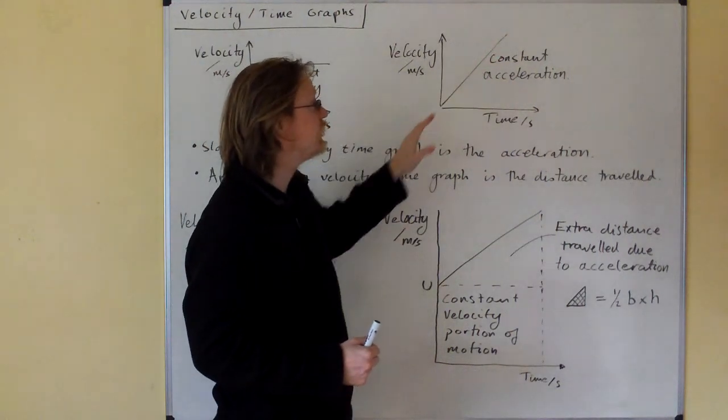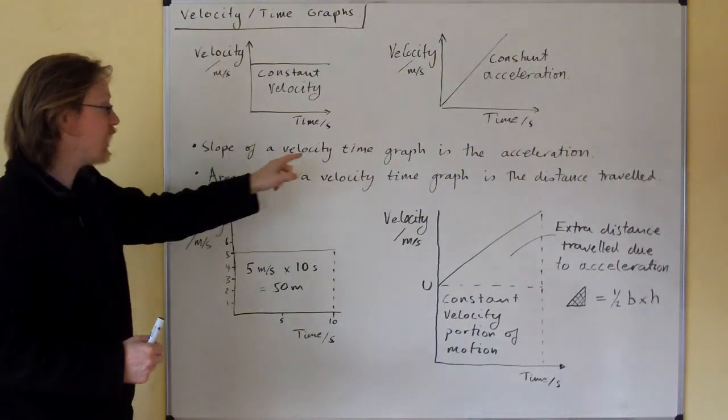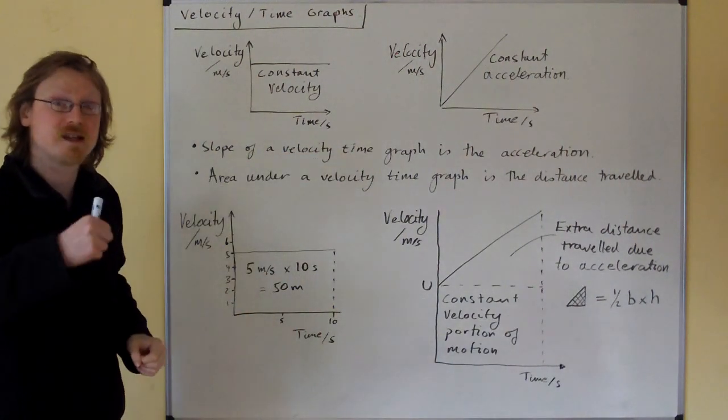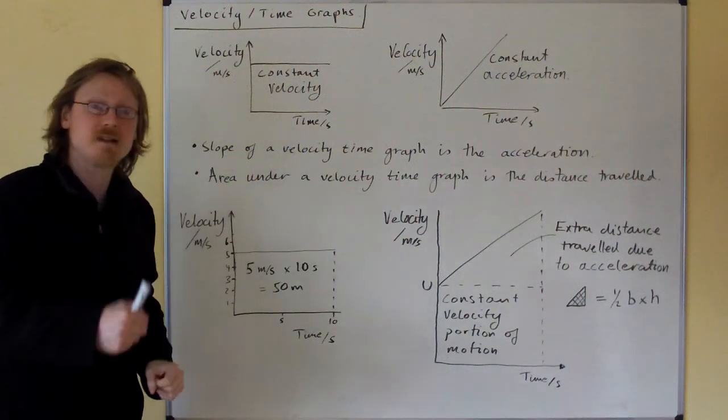If we have a constantly sloping graph, we have a constant acceleration. The slope of a velocity time graph is the acceleration. The area under a velocity time graph is the distance travelled.